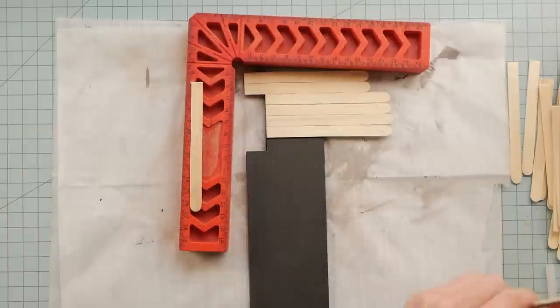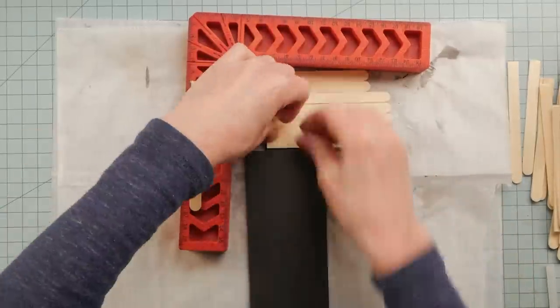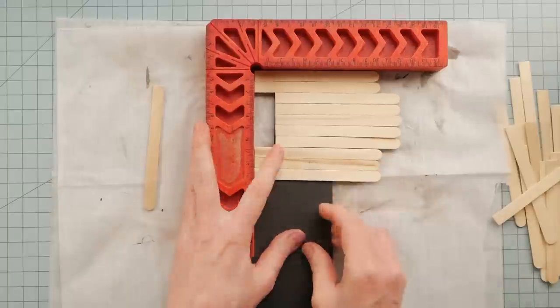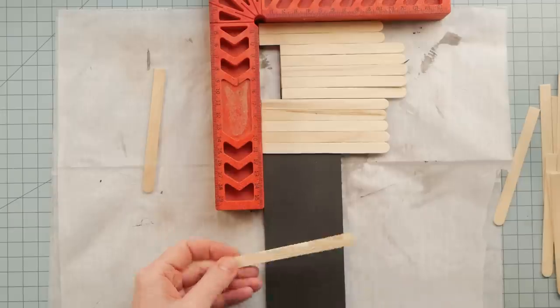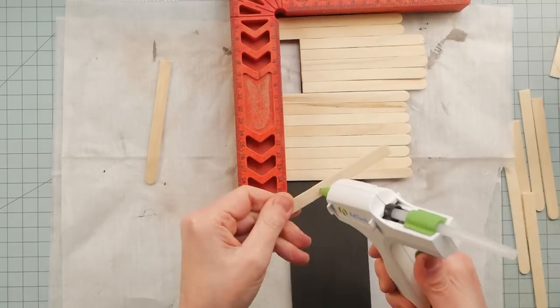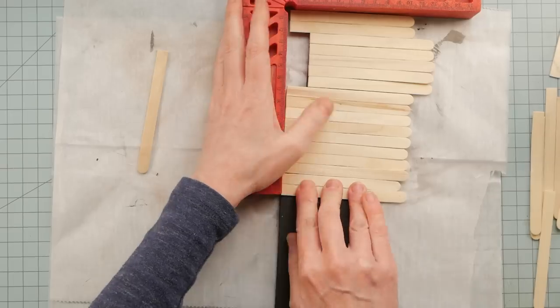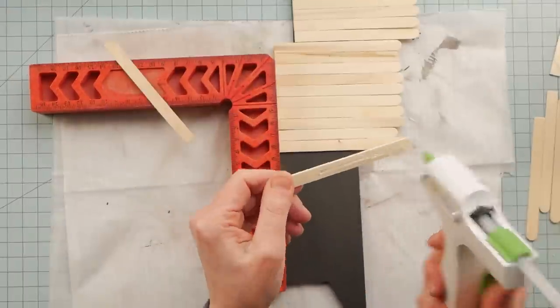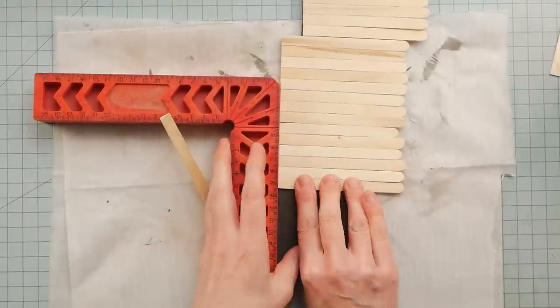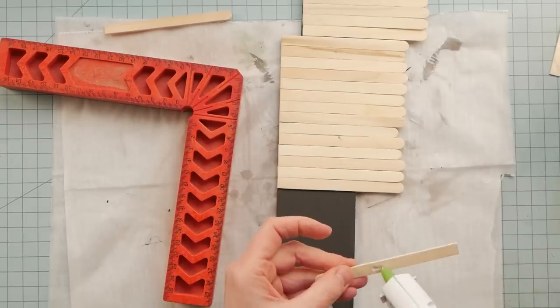Basically all I do is hot glue all of these popsicle sticks to the floor. I like the hot glue because it does stick down really quickly. And I don't have to worry about holding things together while I'm waiting for it to dry. And because the hot glue is just on the bottom, it's not going to mess up anything I do on top, as long as I don't let it squish through the middle of the boards, which I try really hard not to do.